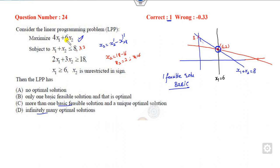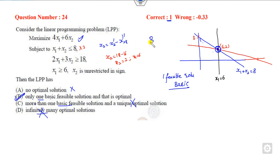Since there is no need to compute further, the right answer is: there is no optimal solution — cancel that out. Only one feasible solution — that is the right answer. More than one basic feasible solution is not possible because there is only one. Infinite many options will also be cancelled out. So the right answer is Answer B.